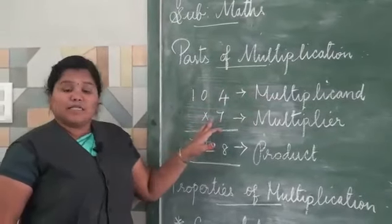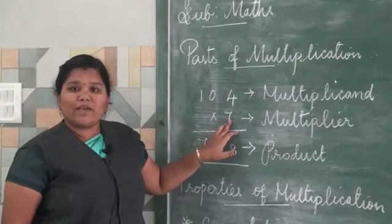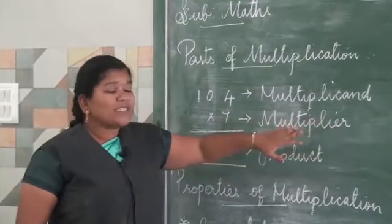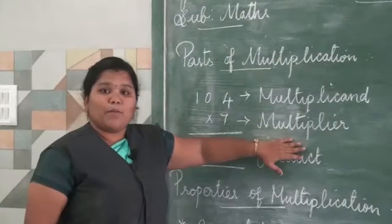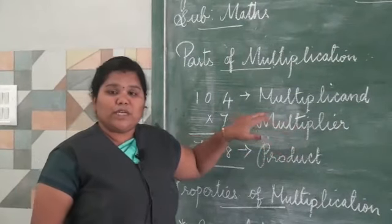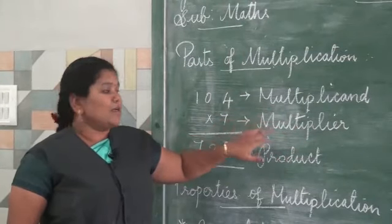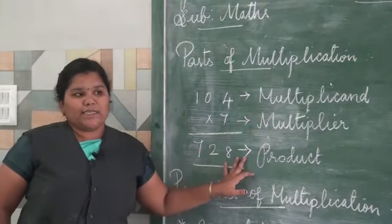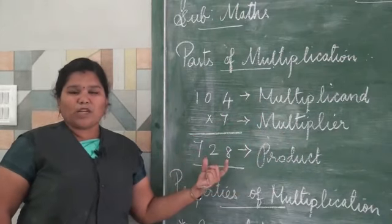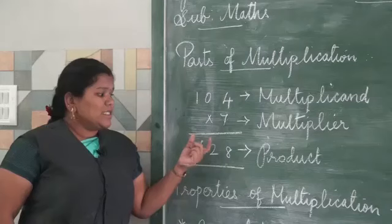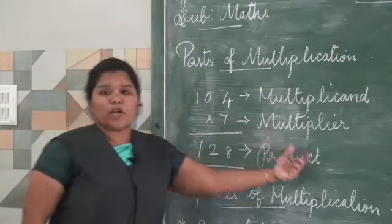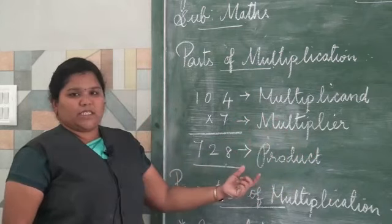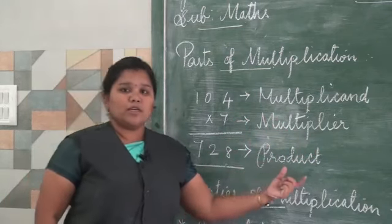Next is the number seven. Seven is the multiplier. The number by which we multiply is called the multiplier. Next, 728 is the product. The answer that we get is called the product.